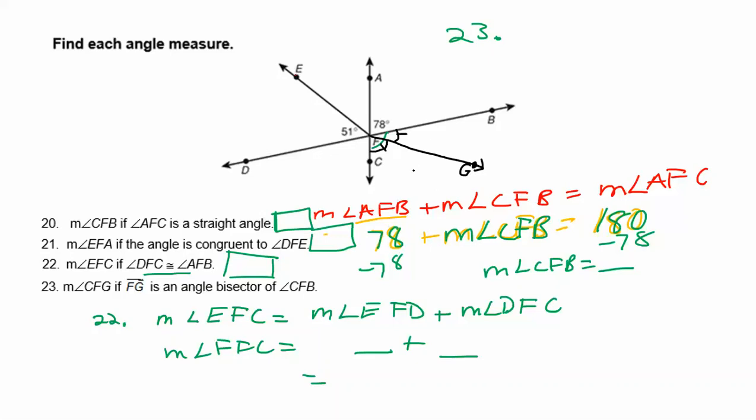And we want to know what CFG is. If you look back at an earlier problem, number 20, we found the measure of angle CFB in that problem. You took 180 minus 78, and you got the measure of angle CFB. So if you take that answer, take your answer from number 20, whatever you got, measure of angle CFB, and you divide it by two, because angle bisector means you have two exactly congruent parts, then you'll have your answer for number 23. Angle CFG is half of whatever you got for number 20.